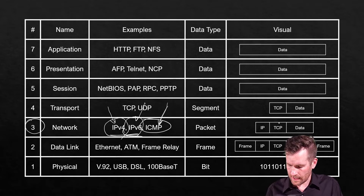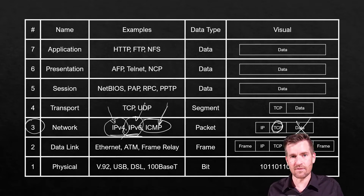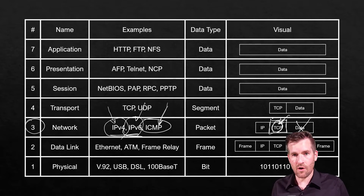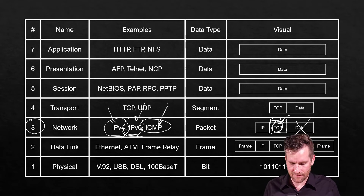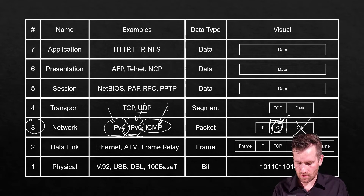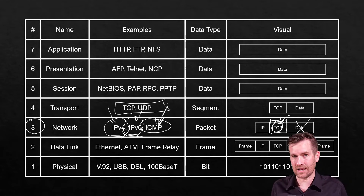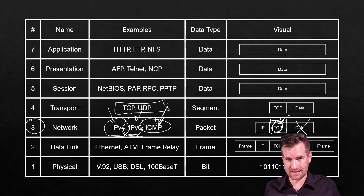So if we were to actually take a look at the datagram unit here, ICMP would take the place of the TCP header. You wouldn't have data at the end, but it would sit right where the TCP header is, although it doesn't have a TCP or UDP layer 4 on it. So it operates at layer 3 still.